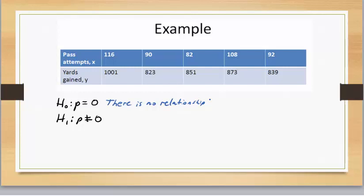If the correlation coefficient is not equal to zero, then that means that there is some relationship that exists between the two variables.